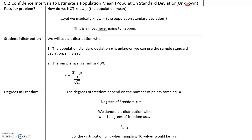When we don't know what the population standard deviation is, we don't use the normal distribution. The normal distribution is used when the population standard deviation is known. When the population standard deviation is unknown, we will use the student t-distribution. So when sigma is unknown, we cannot use the normal distribution — instead, we will use the t-distribution.